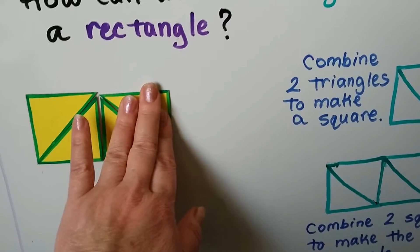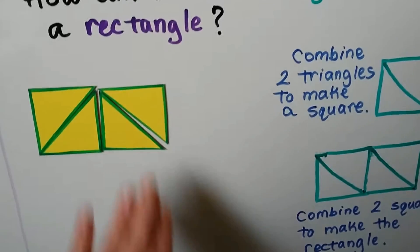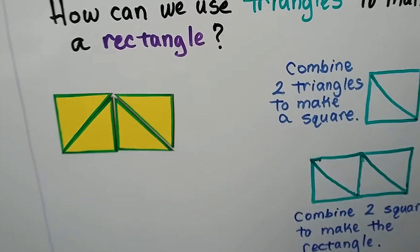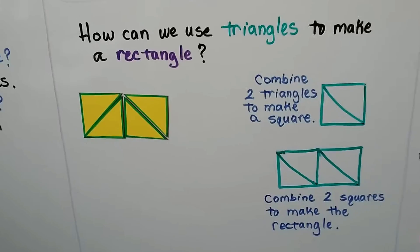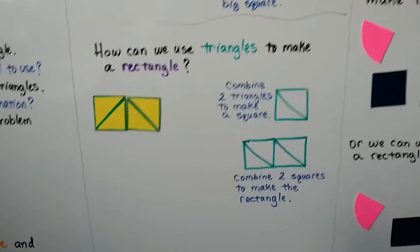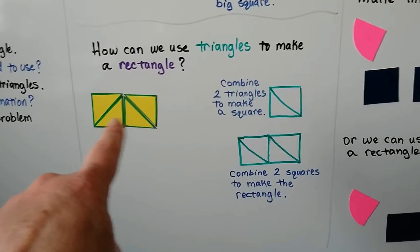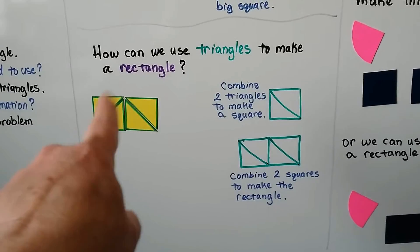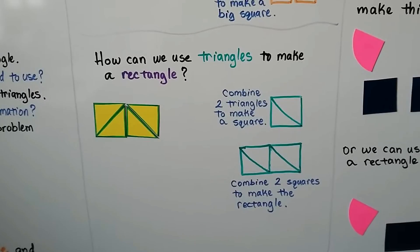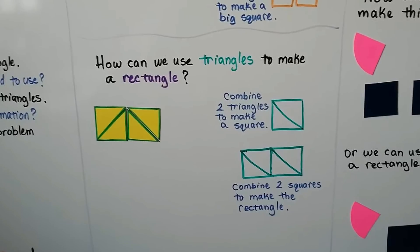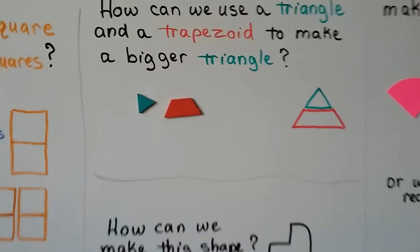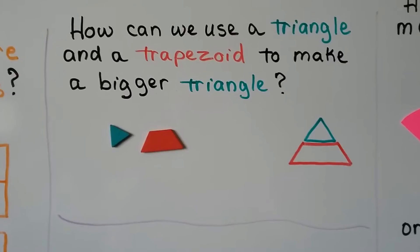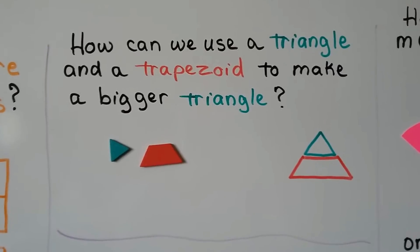Look at how these two triangles in the middle made a bigger triangle. But if we put all four triangles together, we can make a rectangle. How can we use a triangle and a trapezoid to make a bigger triangle?